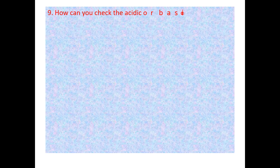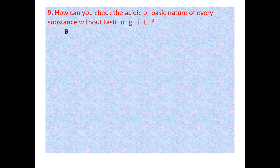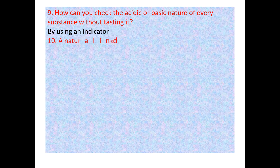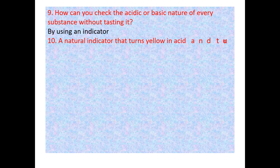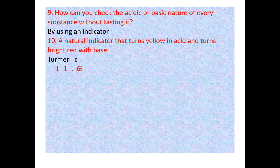Question 9: How can you check the acidic or basic nature of a substance without tasting it? By using an indicator. Question 10: Name the natural indicator that turns yellow in acid and turns bright red with a base. That's turmeric.